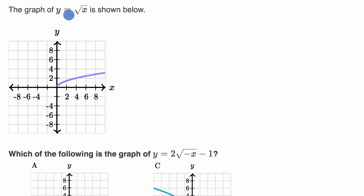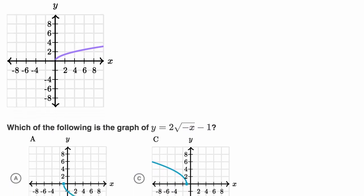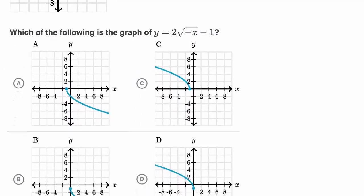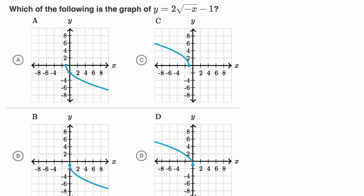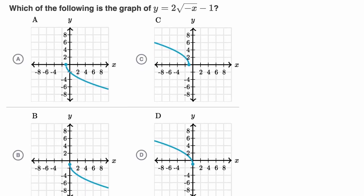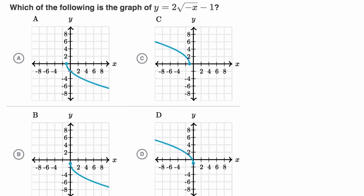We're told the graph of y equals square root of x is shown below. Which of the following is the graph of y equals two times the square root of negative x minus one? They give us some choices here. I encourage you to pause this video and try to figure it out on your own before we work through this together.